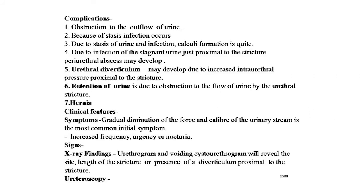Complications of urethral stricture: the major complication is obstruction to outflow of urine; second is stasis leading to infection; third is calculi formation due to infection of stagnant urine just proximal to the stricture; fourth is periurethral abscess; fifth is urethral diverticulum development due to increased intraurethral pressure proximal to the stricture; sixth is retention of urine; seventh is hernia.